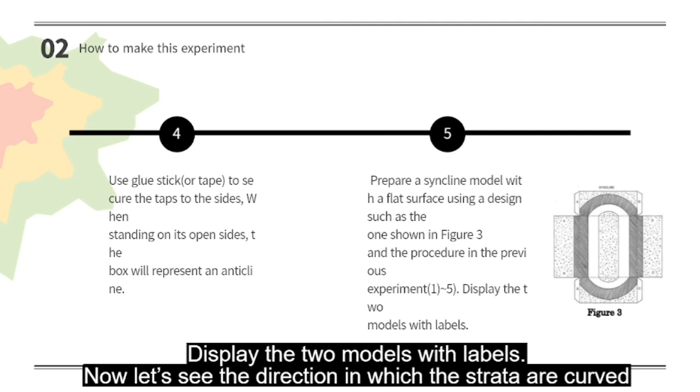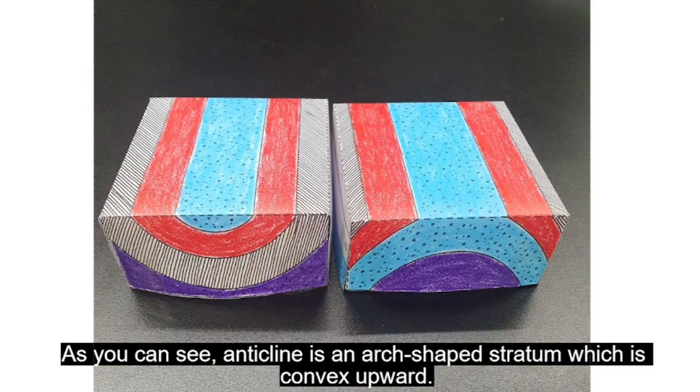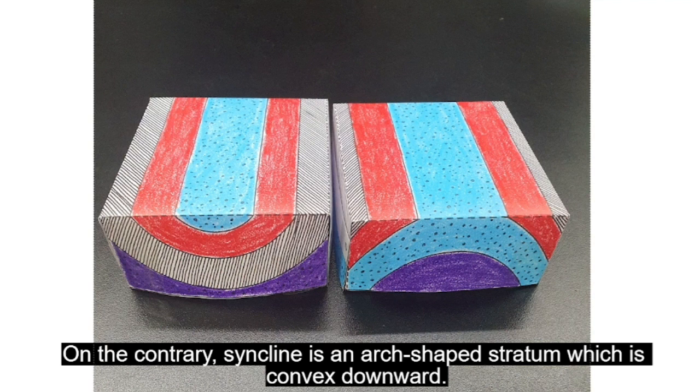Now, let's see the direction in which the strata are curved. As you can see, anticline is an arch-shaped stratum which is convex upward. On the contrary, syncline is an arch-shaped stratum which is convex downward.